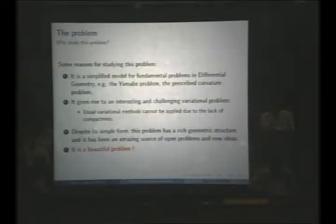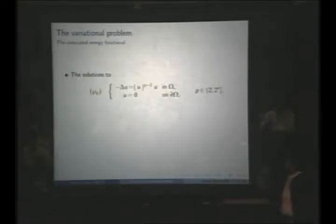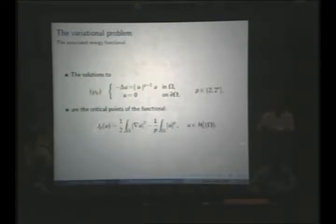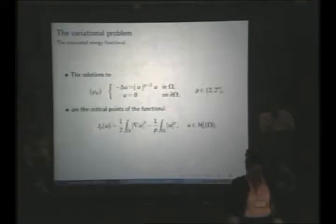Let me go to the variational formulation. I will consider not only the critical exponent but an exponent p which is larger than 2 and smaller than or equal to 2-star. The solutions of this problem are critical points of a functional J_p, which looks like: one half of the integral of |∇u|² minus 1 over p times the integral of u to the p, for u in the Sobolev space H₀¹.